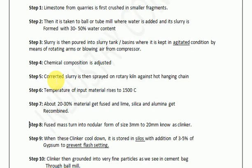Now we have the slurry which keeps rotating in the slurry tank. From the slurry tank, we spray this slurry onto a rotary kiln against hot hanging chains. There is an arrangement to increase the temperature of this slurry to begin the chemical reaction — a rotary kiln arrangement with hot hanging chains where the slurry is sprayed in and the temperature rises.